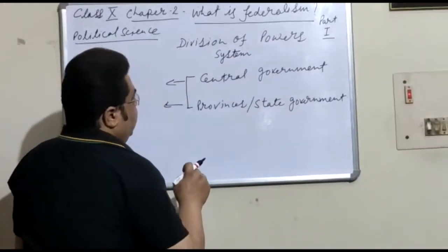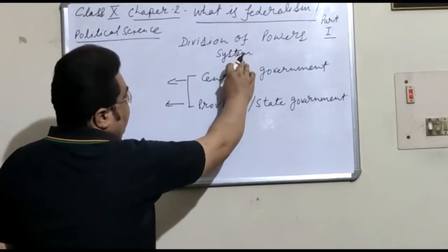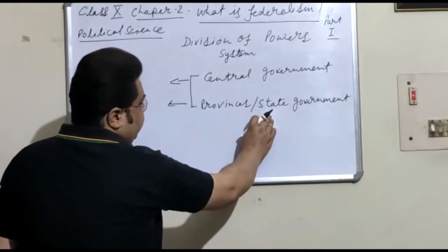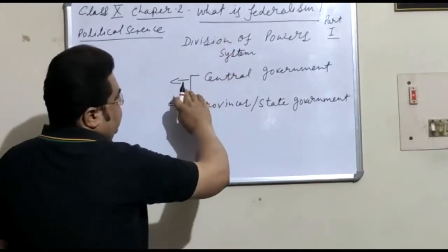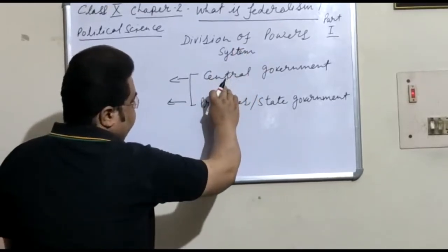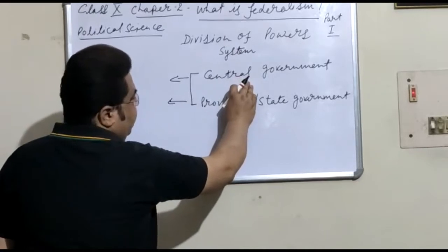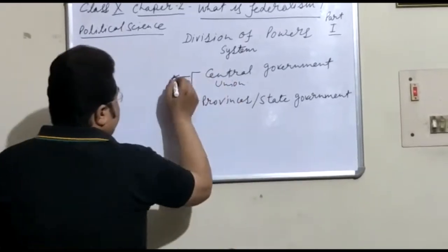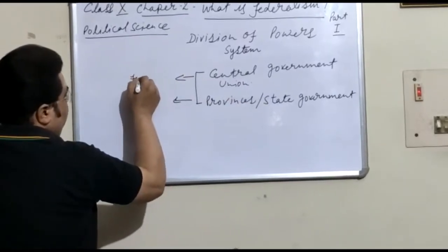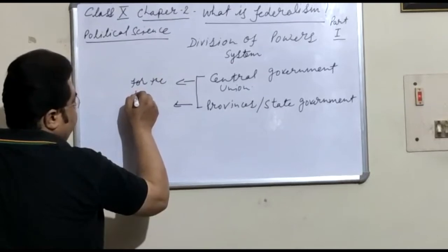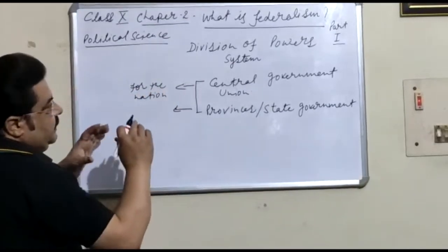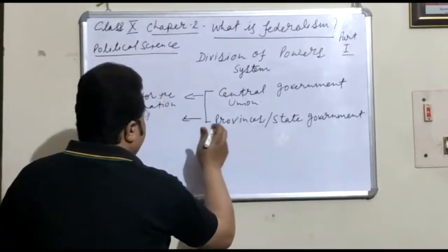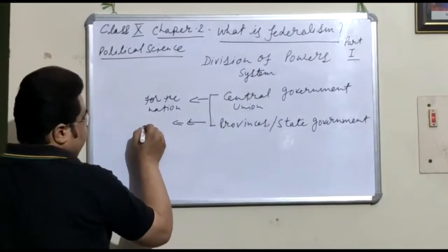What is the meaning of Federalism? Federalism means it is a system of division of powers between the Central Government and the State Government or Provinces. Powers are given to the Central Government and State Governments. Central Government we can also call Union Government. Central Government refers to the government for the whole country, for the entire nation. It means Central Government is able to take decisions for the entire country, and powers are given to the State Government to look after the work at the regional level.